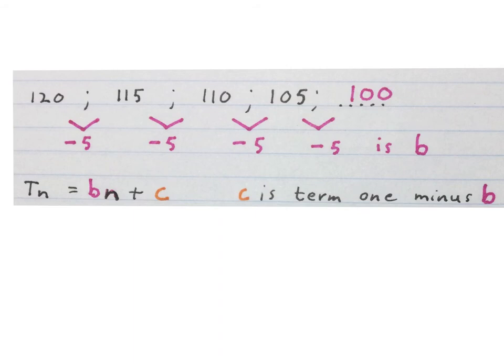So we know it is a linear pattern and we're going to use this formula because there's a constant difference of minus 5, which is the b value, and we remind ourselves c is term 1 minus b.